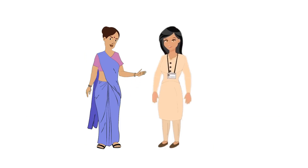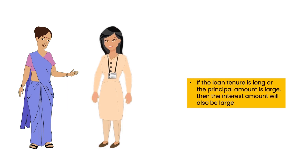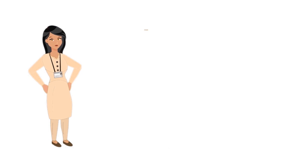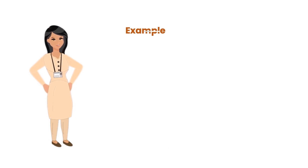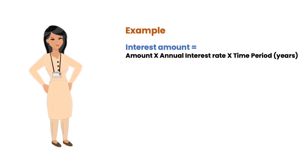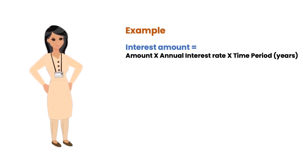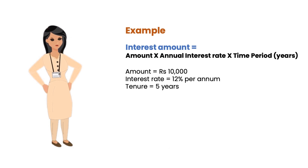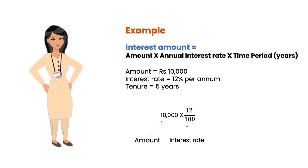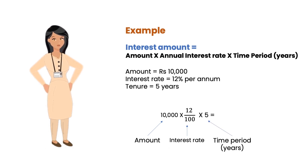So, madam, if I understand correctly, if the loan tenure is long or the principal amount is large, then the interest amount to be paid will also be large, right? Yes, you are right, Kusum. Let us take an example to calculate the interest amount. Interest amount can be calculated by multiplying the amount with the annual interest rate and the time period in years. So, if we have to calculate interest on Rs 10,000 at an interest rate of 12% per annum for 5 years, we can calculate it by multiplying Rs 10,000 with 12/100 and then multiplying by 5. So, we get Rs 6,000.